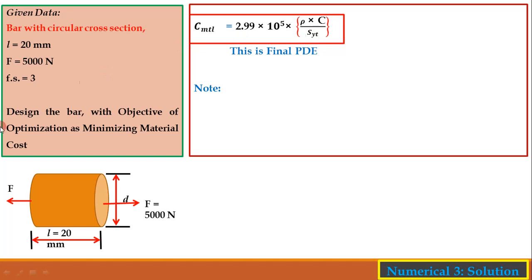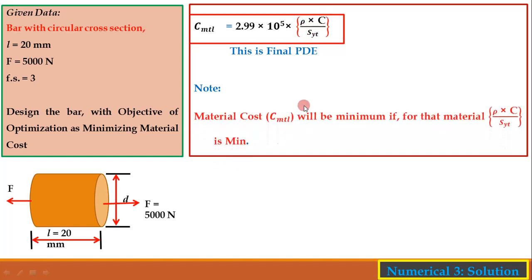Note that the objective is minimization of material cost. The material cost C_mtl will be minimum if the group of material parameters ρ × C / S_yt is minimum. Therefore, we must select the material for which this group of parameters is minimum.